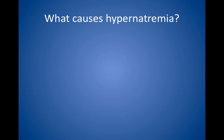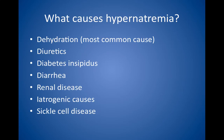What causes hypernatremia? The most common cause is dehydration, or free water loss, caused by inadequate fluid intake relative to bodily needs. Watch for diuretics, diabetes insipidus, diarrhea, and renal disease, as well as iatrogenic causes such as administration of too much hypertonic IV fluid. Sickle cell disease, which may lead to renal damage and isosthenuria — the inability to concentrate urine — is a rare cause of hypernatremia, as are hypokalemia and hypercalcemia, which also impair the kidney's concentrating ability.